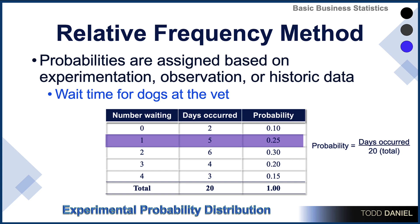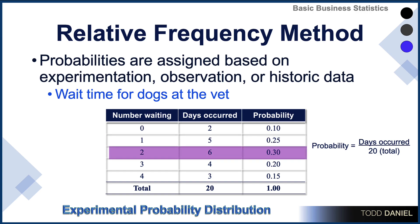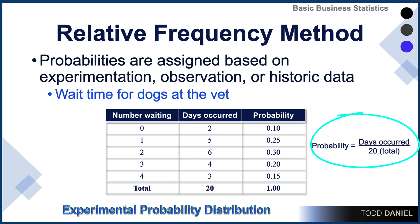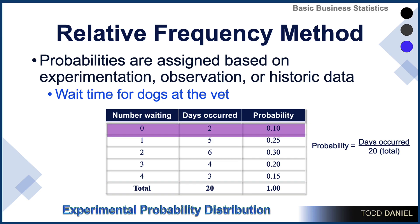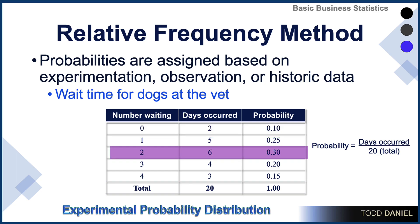On two days, no one was waiting when the vet opened. On five days, one person was waiting. On six days, two people were waiting, and so on through the probability table. We can then divide the number of days that an event occurred by 20 — the total number of days observed — to calculate the probabilities. The probability of going to the vet and having no one waiting at eight in the morning is 0.10. Only 10% of the time would that occur. 30% of the time, two people would be waiting — the most frequently occurring value. This is an example of an experimental probability distribution.